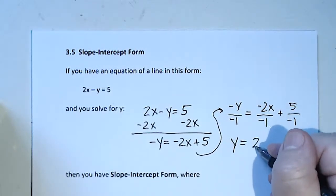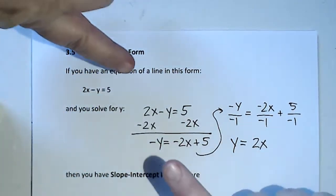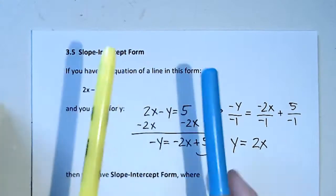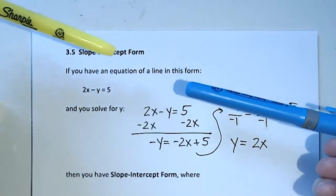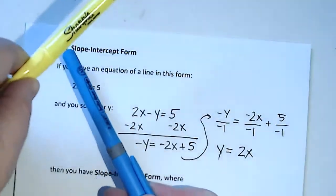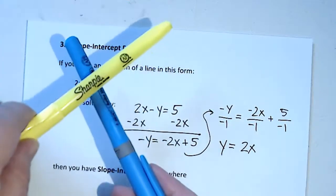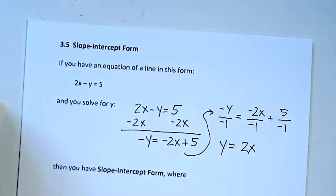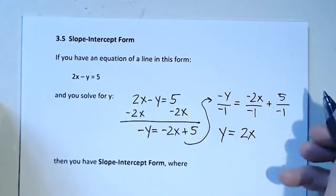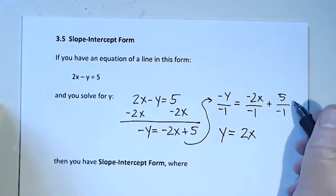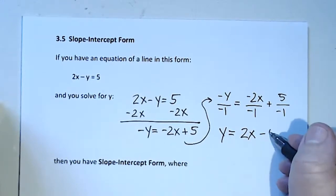I get y equals... notice the minus over a minus, that's a plus. Two minuses make a plus. So y = 2x, positive 2x, and the 5 over -1 becomes -5. So y = 2x - 5.